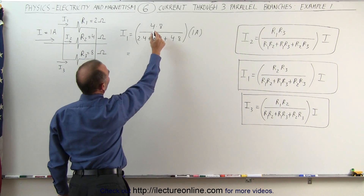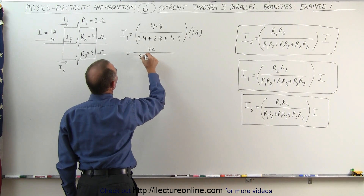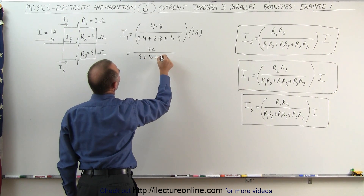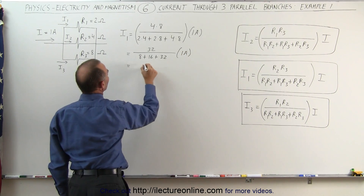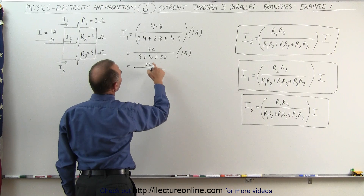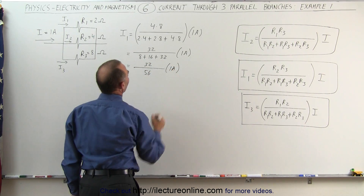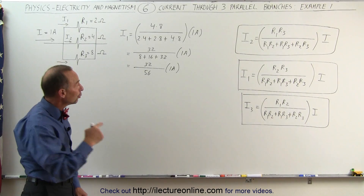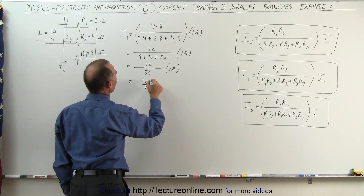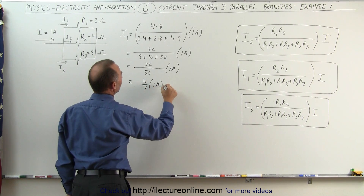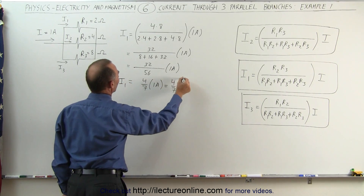Simplifying this, the numerator is 32, divided by 8 plus 16 plus 32, all times 1 amp. This becomes 32 divided by 56 times 1 amp. Dividing both numerator and denominator by 8, we end up with 4 over 7 times 1 amp, which is equal to 4 sevenths of an amp. That is the current through the top branch.